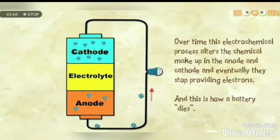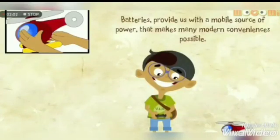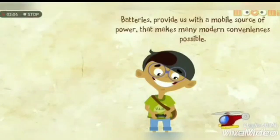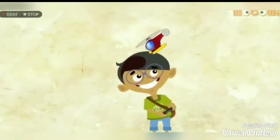Over time, this electrochemical process alters the chemical makeup in the anode and cathode, and eventually they stop providing electrons. And this is how a battery dies. Batteries provide us with a mobile source of power that makes many modern conveniences possible.